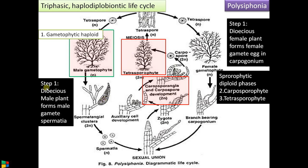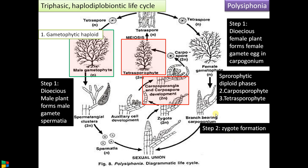Moving into the life cycle: Polysiphonia is a dioecious plant, having separate male and female gametophytes. The male plant produces male gametes as spermatangial clusters, forming male gametes called spermatia. The female plant produces a structure called the carpogonium, the female sex organ, which has a receptive structure called the trichogyne at the top, with the egg formed inside. The male gamete is received by the trichogyne, enters through it, reaches the egg, fertilizes it, and forms a zygote.